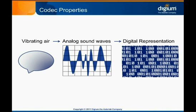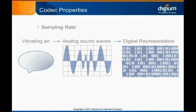Each codec has several distinguishing features. The sampling rate — the number of audio snapshots taken per second — is one important factor. Historically, 8,000 Hz, or samples per second, has been the rule. Over the past several years, higher quality wideband codecs with sampling rates of 16,000 or even 32,000 Hz have become increasingly common for VoIP calls.